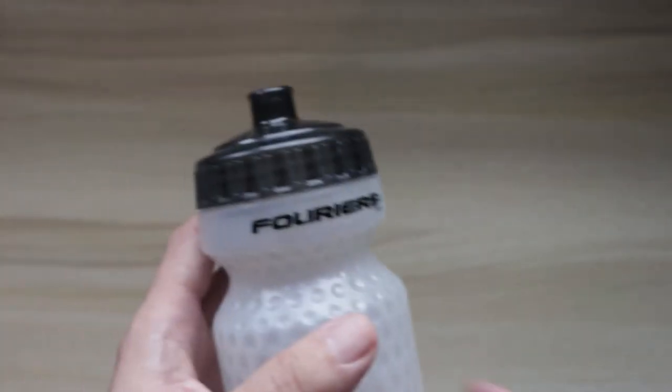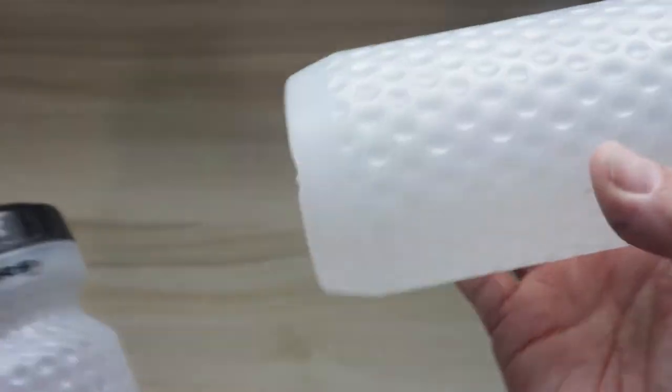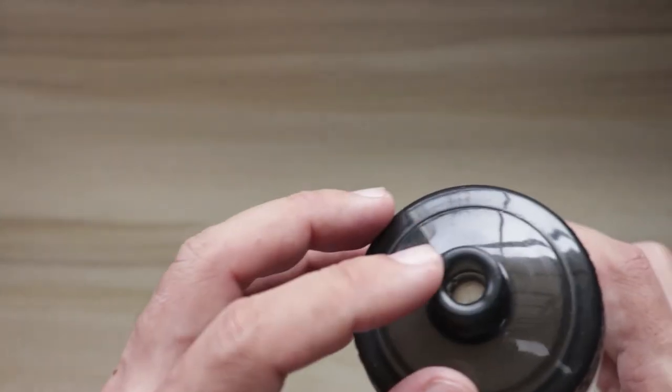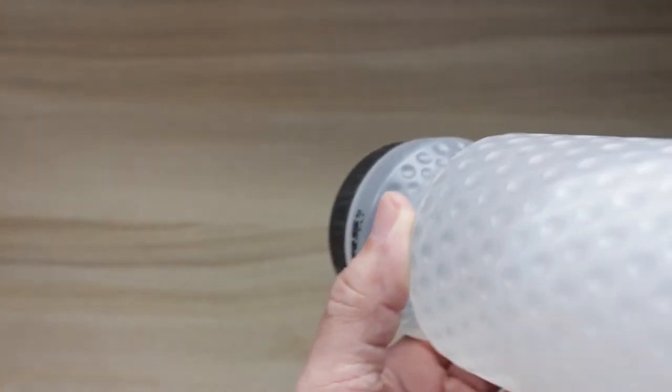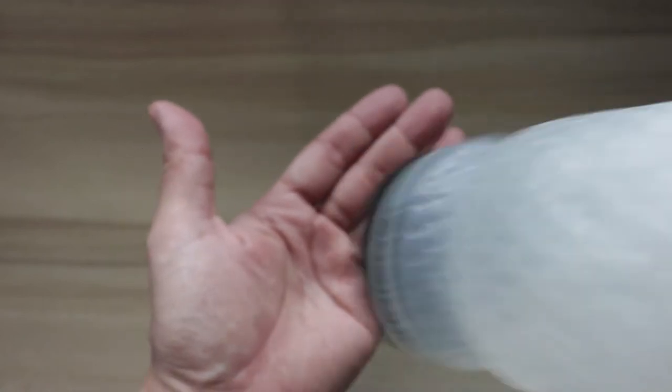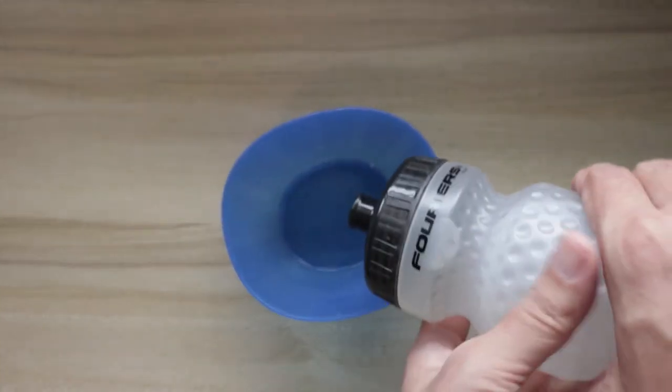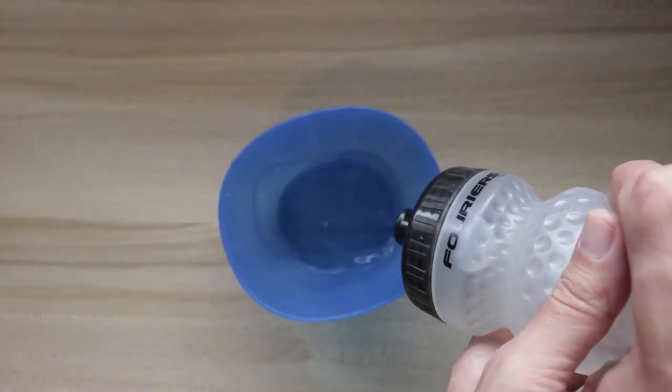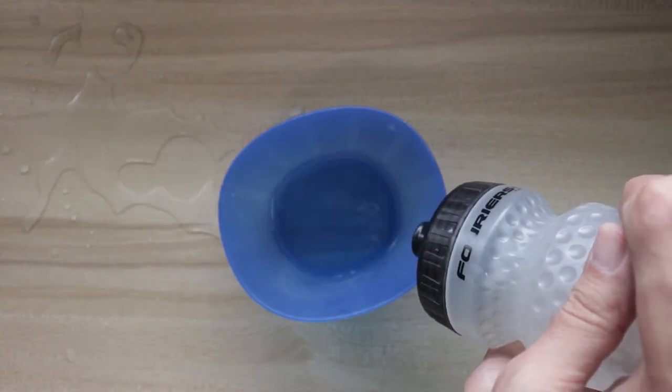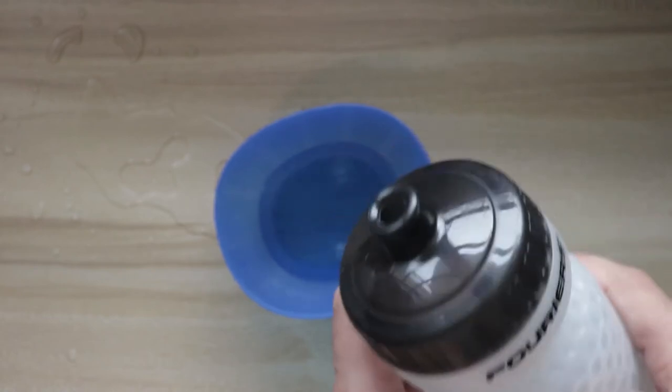Now let me demonstrate how the valve functions. Right here I have another Fouriers bottle which is filled with water. As you can see here, there is no cap, there is no cover here except for the valve, and there is no water coming out even when you turn it upside down and when you shake it - not a single drop. Water will only come out if you squeeze it hard enough.